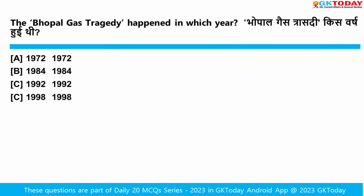When did the Bhopal gas tragedy happen? The Bhopal gas tragedy happened in 1984. A recent study shows that the health consequences are very significant, now affecting generations — causing disability and sometimes cancer due to toxic gas exposure.